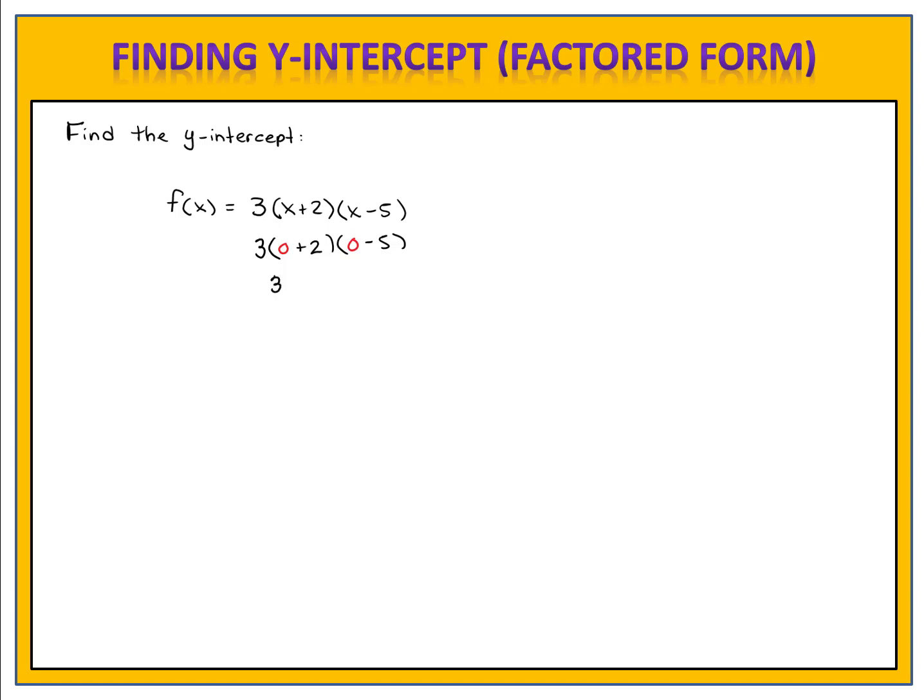We have 3 times 2 times negative 5. 3 times 2 is 6 times negative 5 is negative 30. So the coordinates of the y-intercept are the point (0, -30).